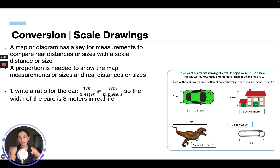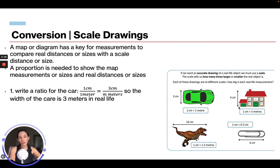We want to know how many meters the car actually is. If we cross multiply — one centimeter equals one meter, and the car width is three centimeters — the car is actually three meters wide. Now looking at this house: the house in the picture is four centimeters tall, but one centimeter equals three meters. So realistically, three times four is twelve — the house is actually 12 meters tall in real life.